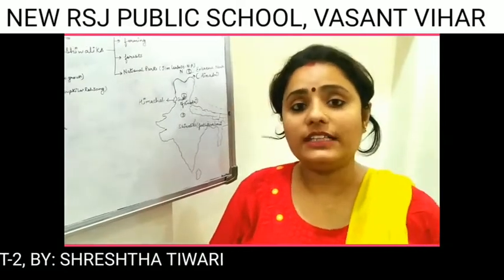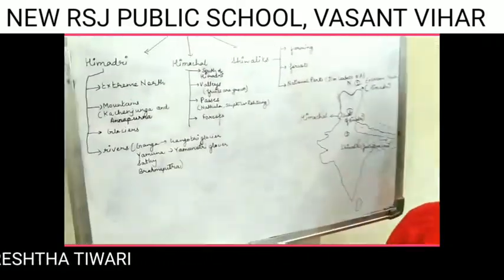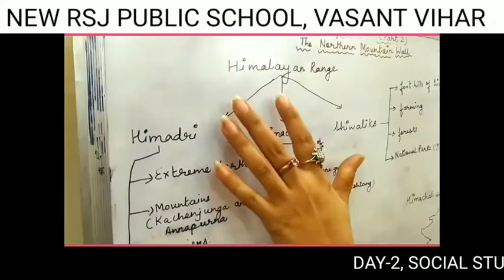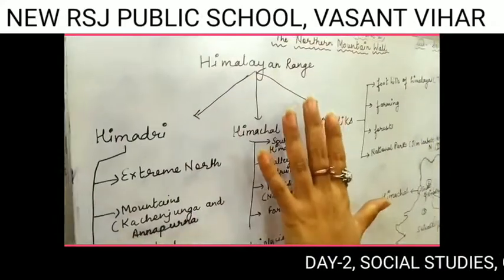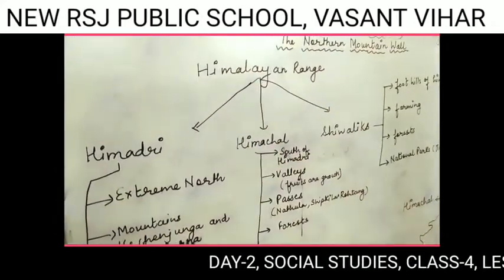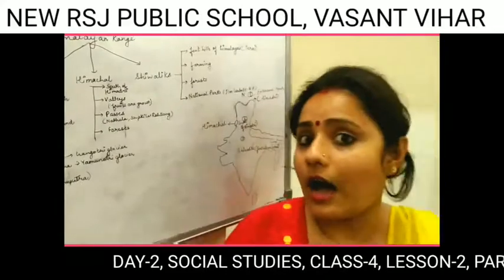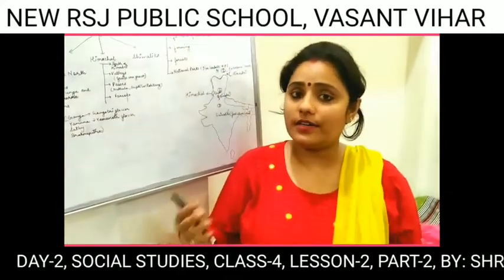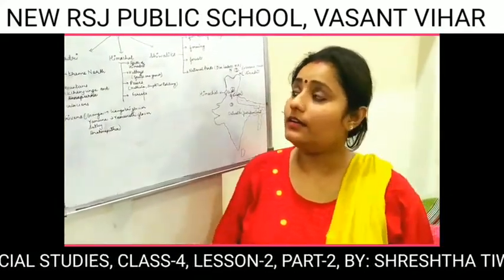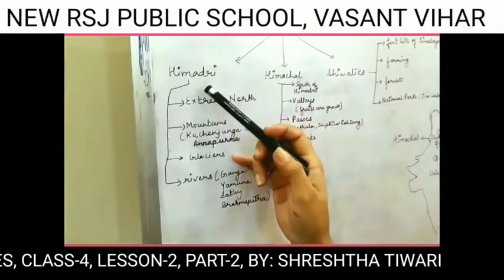Now I am going to explain what is Himalaya, why it is called Himalaya, and into how many parts the Himalaya range is divided. Himalaya is a house of ice — it is covered with ice throughout the year. Himalaya is divided into three parts: Himadri, Himachal, and Shivaliks.